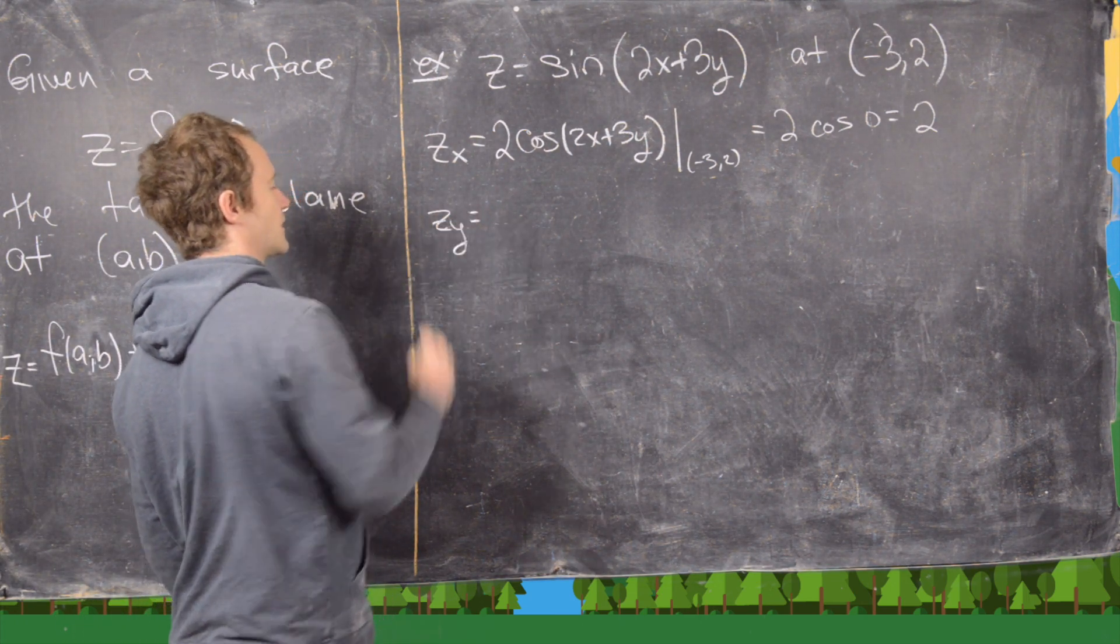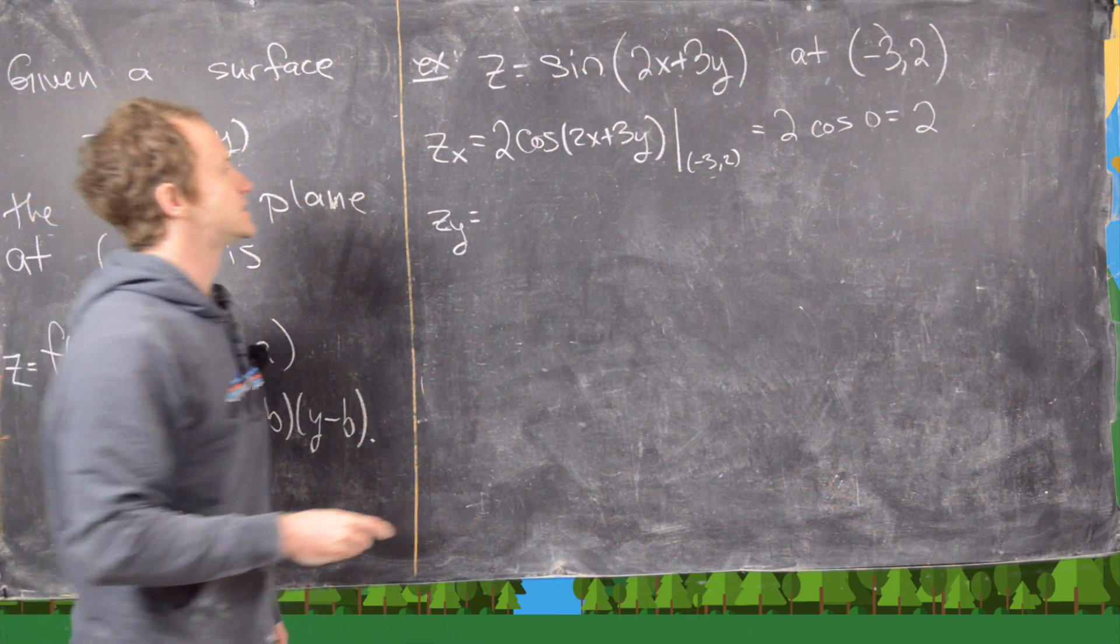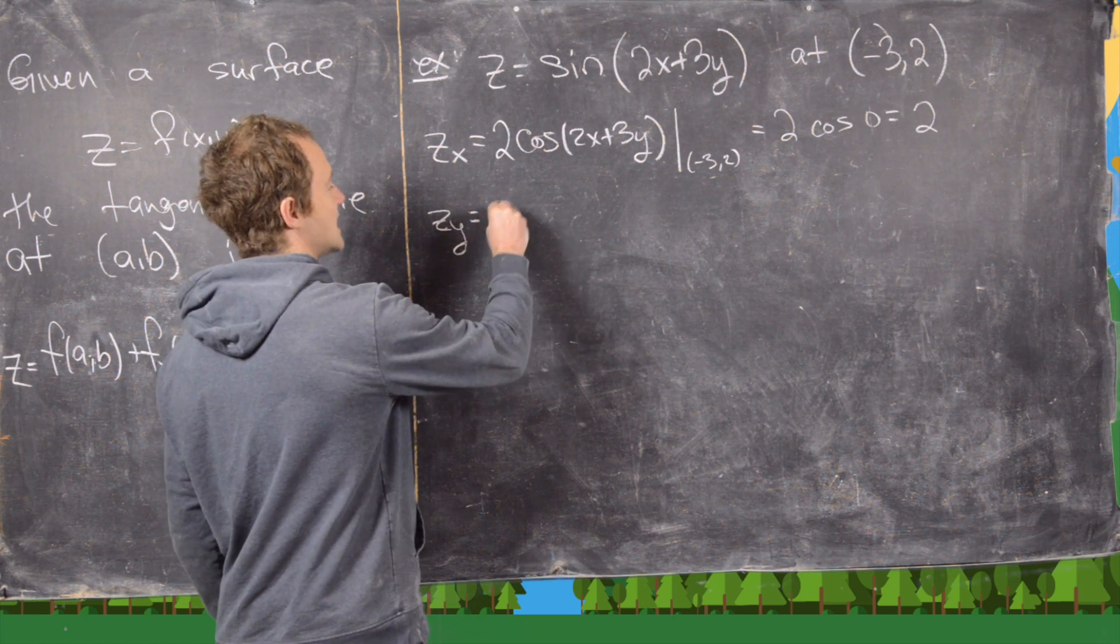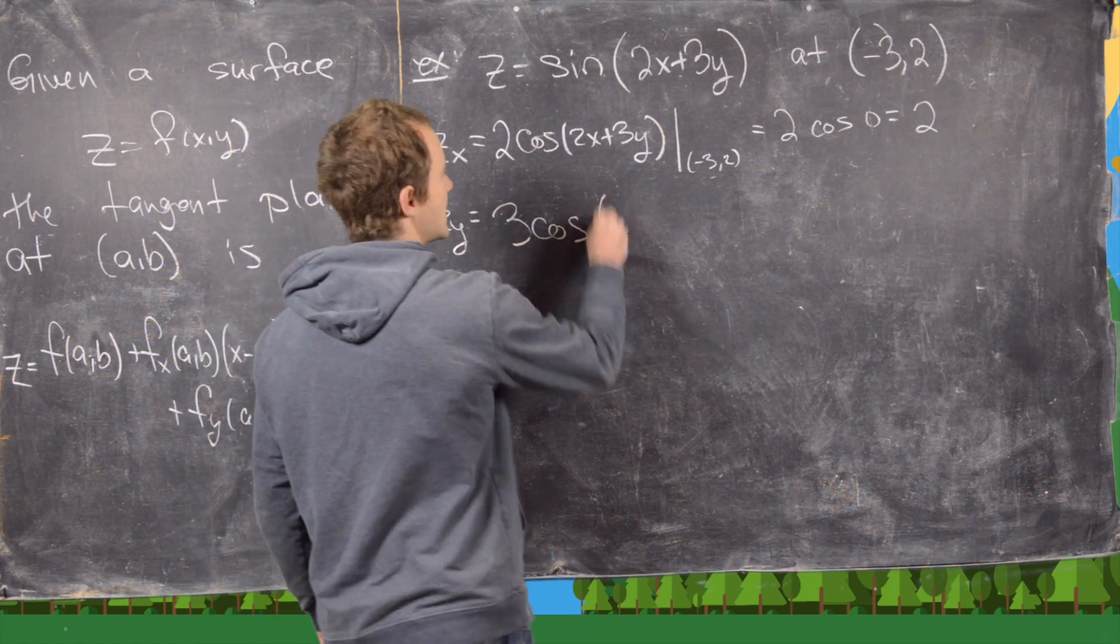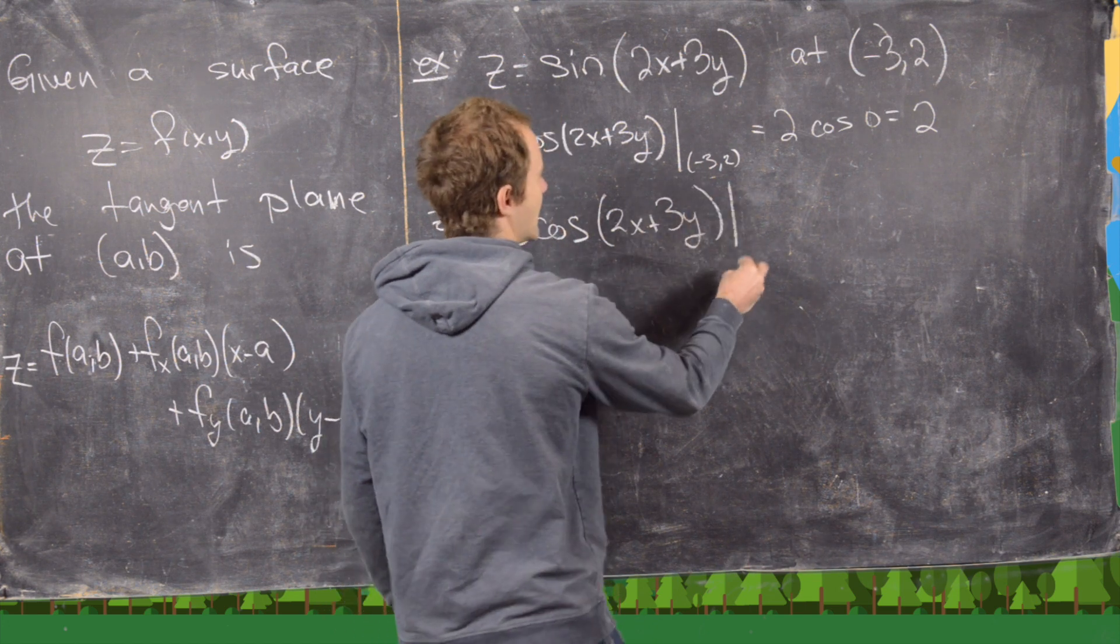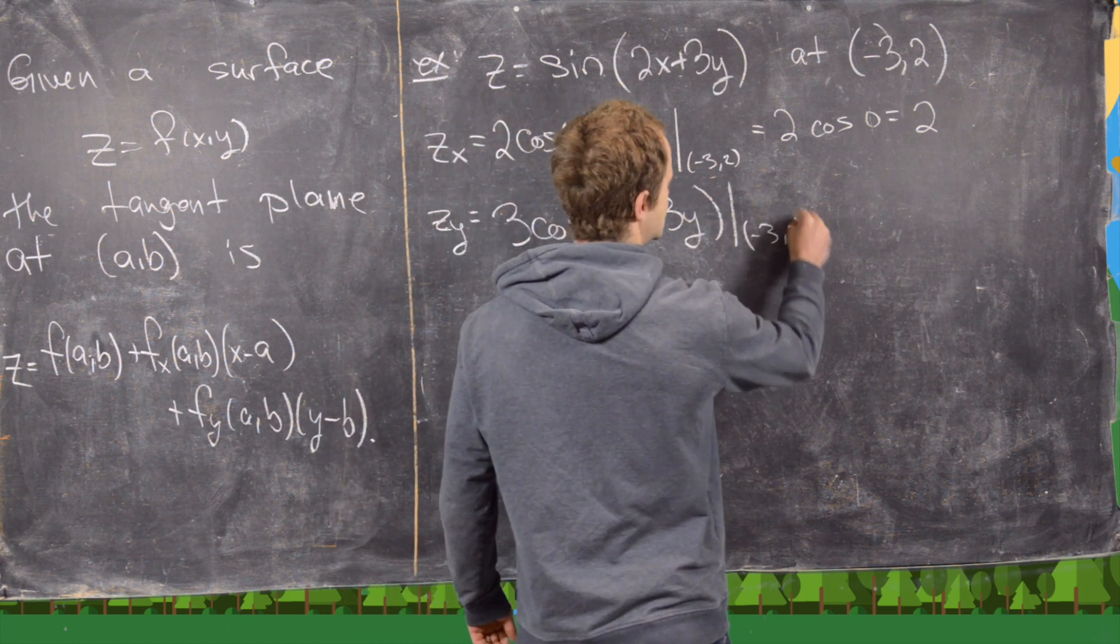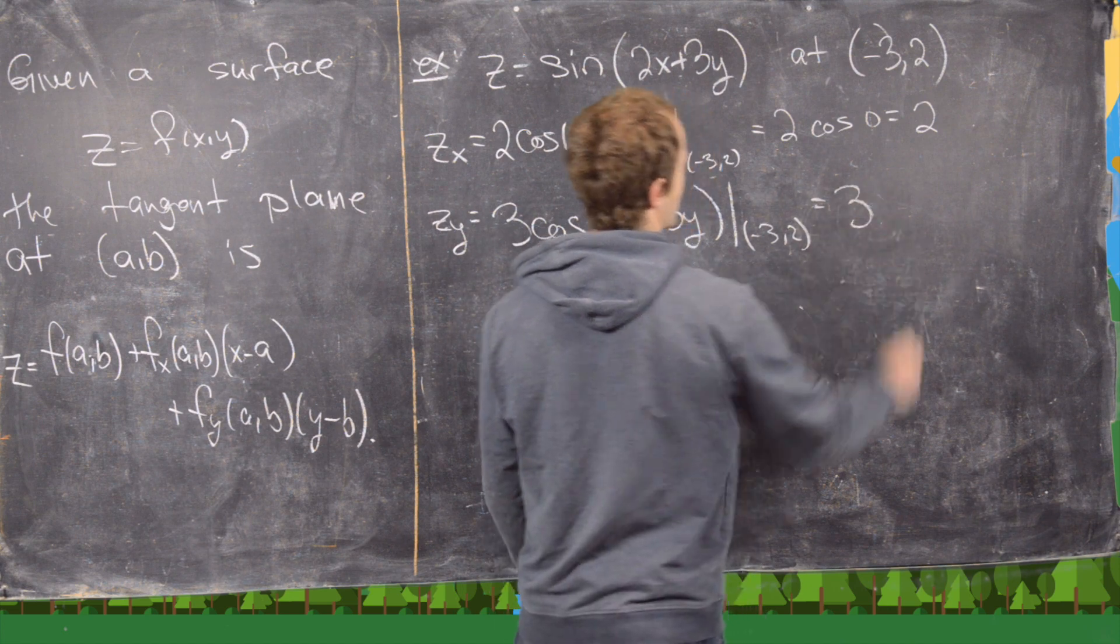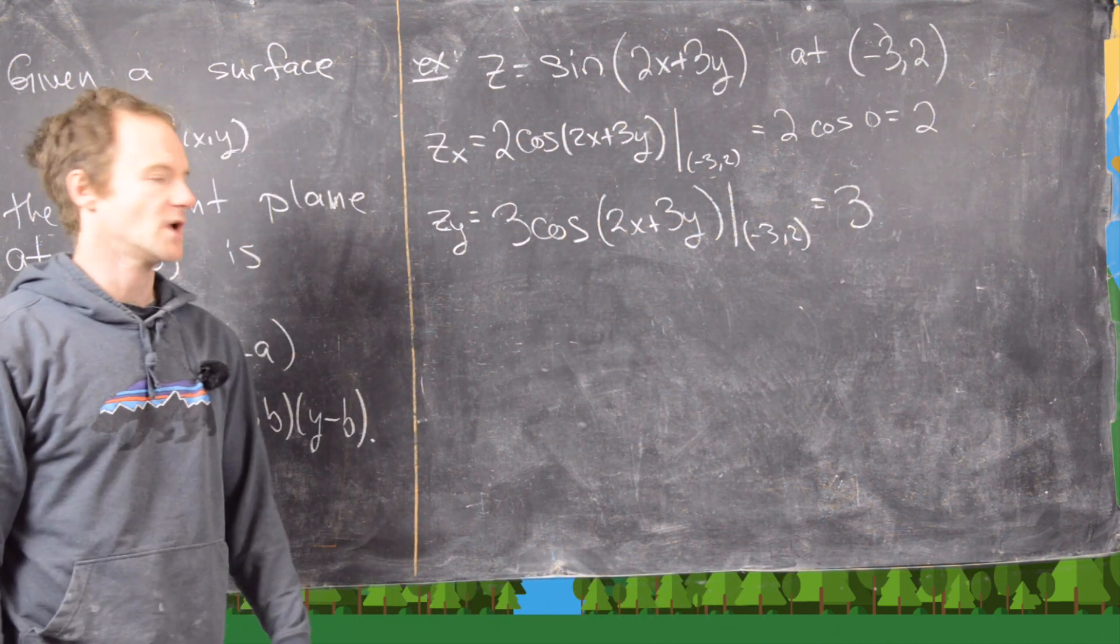Now z sub y, the partial with respect to y. We're going to have pretty much the same thing, but now we'll have 3 cosine of (2x plus 3y). Evaluate that at (-3, 2). Notice we're going to get 3.